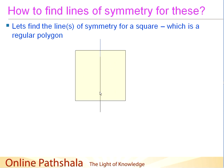Is there another line along which the square exhibits the same property? Yes — we can draw a horizontal line, and folding the upper part over the lower part shows they coincide, making this the second line of symmetry. There is also a diagonal line of symmetry, and one more diagonal in the other direction — folding along each gives coinciding parts. There are no more lines possible, so a square has a total of four lines of symmetry.